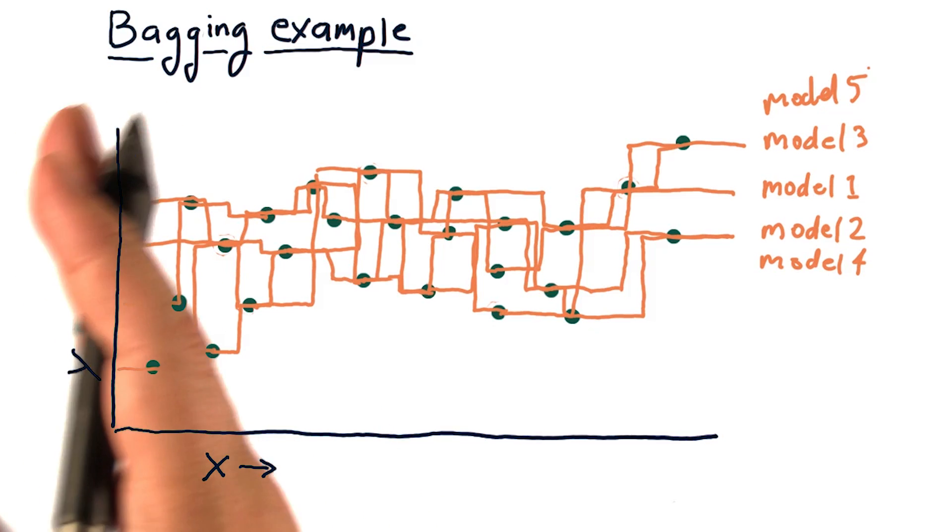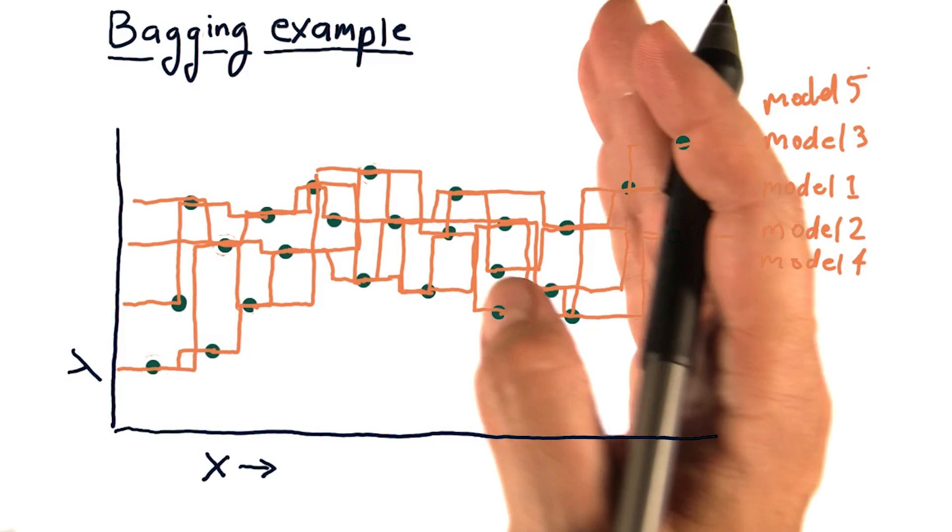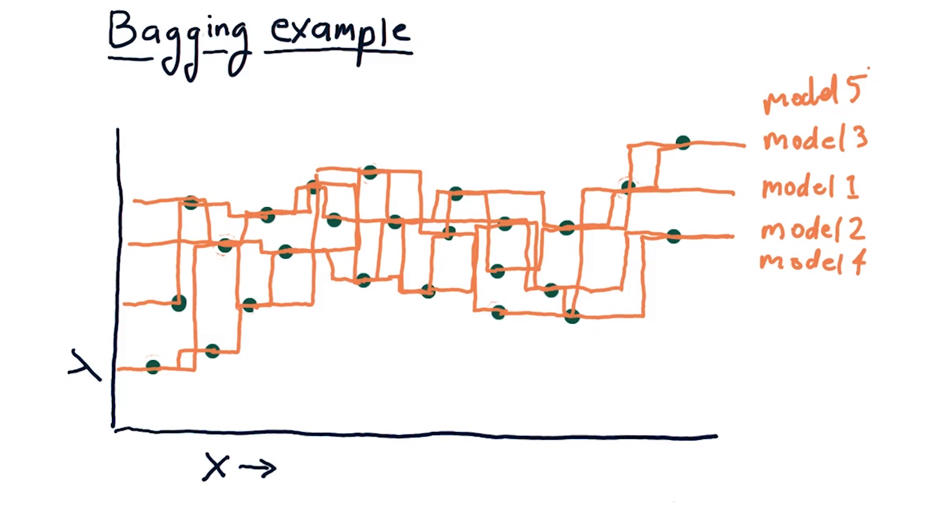But if we now sample at each individual spot across here and take the average across all of them, we get something that's much more smooth. So here's what our ensemble looks like.